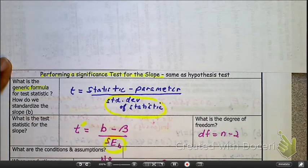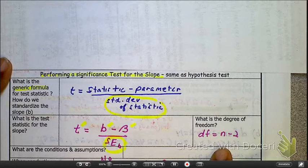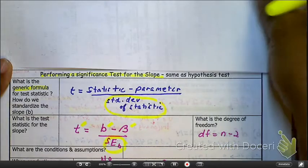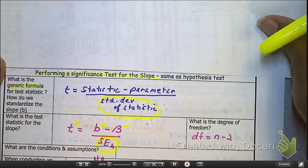We're saying it's a t-test, a t-distribution. We've got the slope of the sample, and then we've got the slope of the population. We have a degree of freedom, which is still n minus 2. The reason is because we have two variables, x and y.